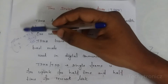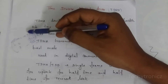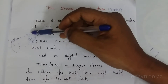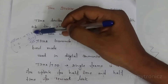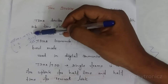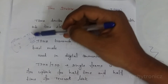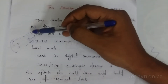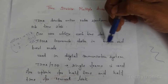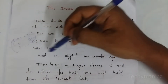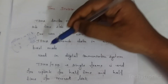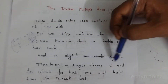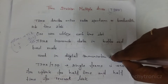When User 1 needs to transmit a signal or share information, if it is not their assigned time slot, it has to wait. During the waiting time, the information is stored in a buffer and transmitted in burst mode. TDMA is mainly used in digital communication systems.